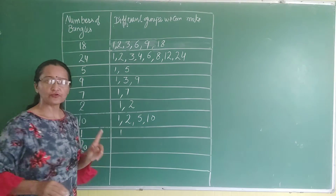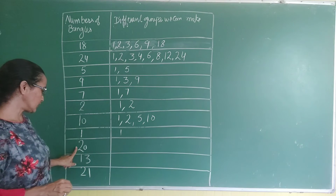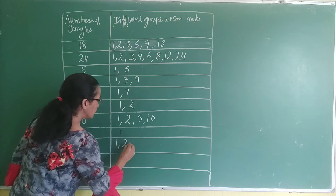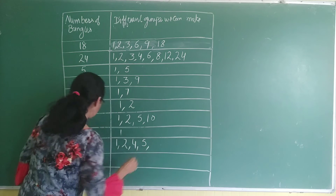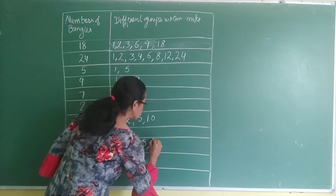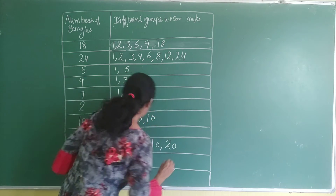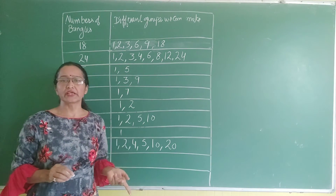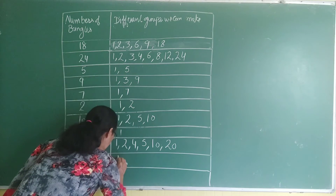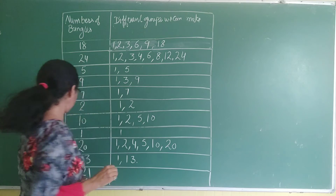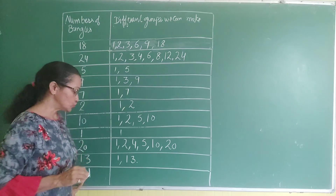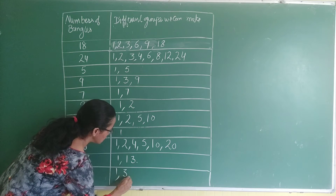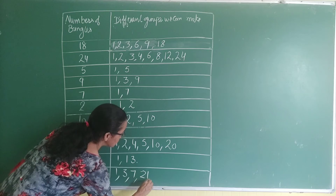Next is 20, with factors 1, 4, 5, and 10. Next is 30, with factors 1 and 30. Last is 21, where we make groups of 1, 3, 7, and 21.